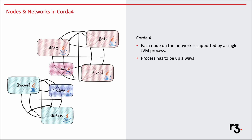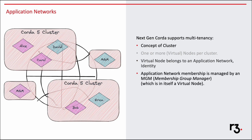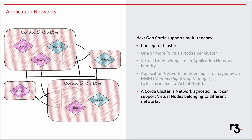So if Carol has to process, let's say, one message a day, that process has to stay up the entire time to listen for the message coming in. With Next-gen Coda, this changes. We have the concept of a cluster. With Next-gen Coda, a cluster can have more than one virtual nodes. Virtual nodes are tied to an application network and an identity. Application network membership is managed by MGM, which is in itself a virtual node. A Coda cluster is network agnostic, that is, it can support multiple virtual nodes belonging to different networks.